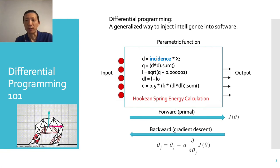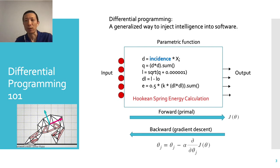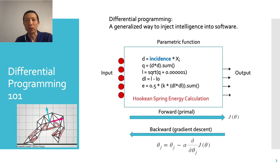If we replace the DNN with another parametric function like this one, which computes the energy of a Hookean spring system, using the same gradient descent, we can make the code automatically evolve, such that the locations of the spring vertices can be automatically adjusted, and hence get such a simulation result.